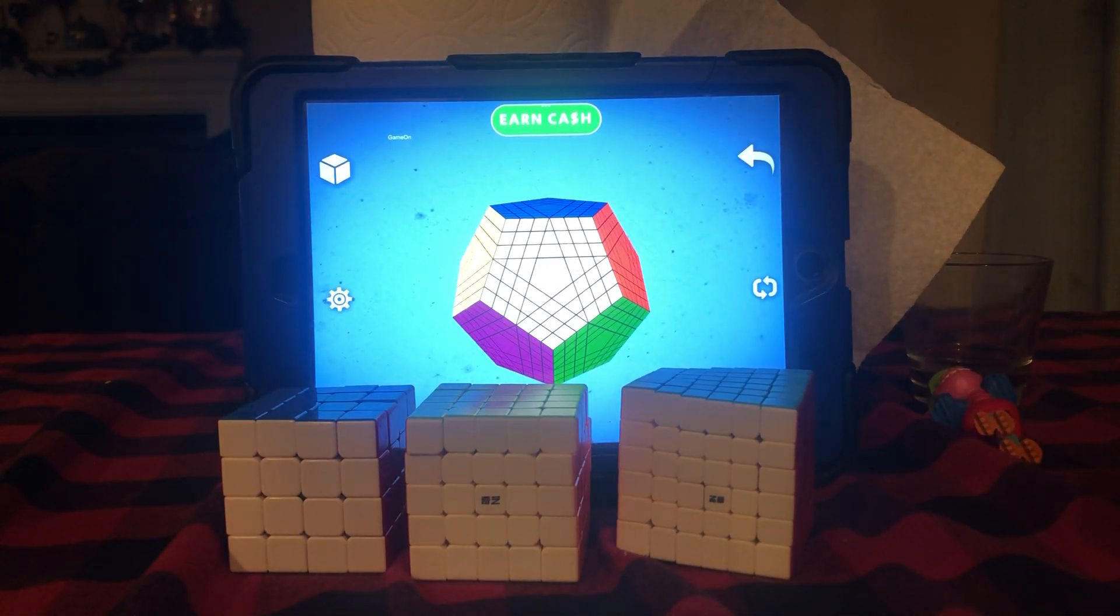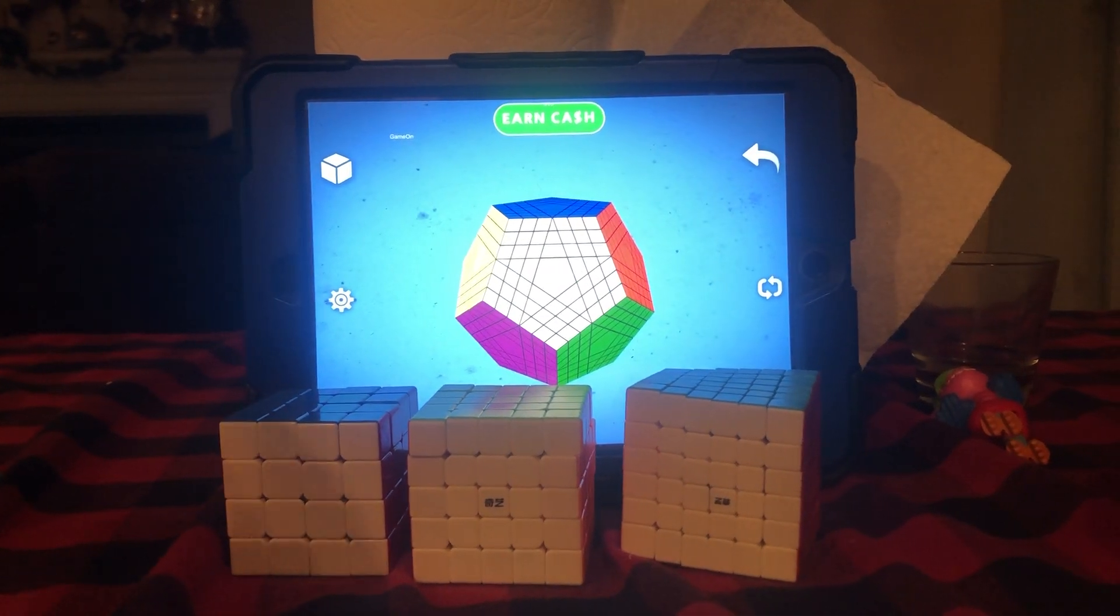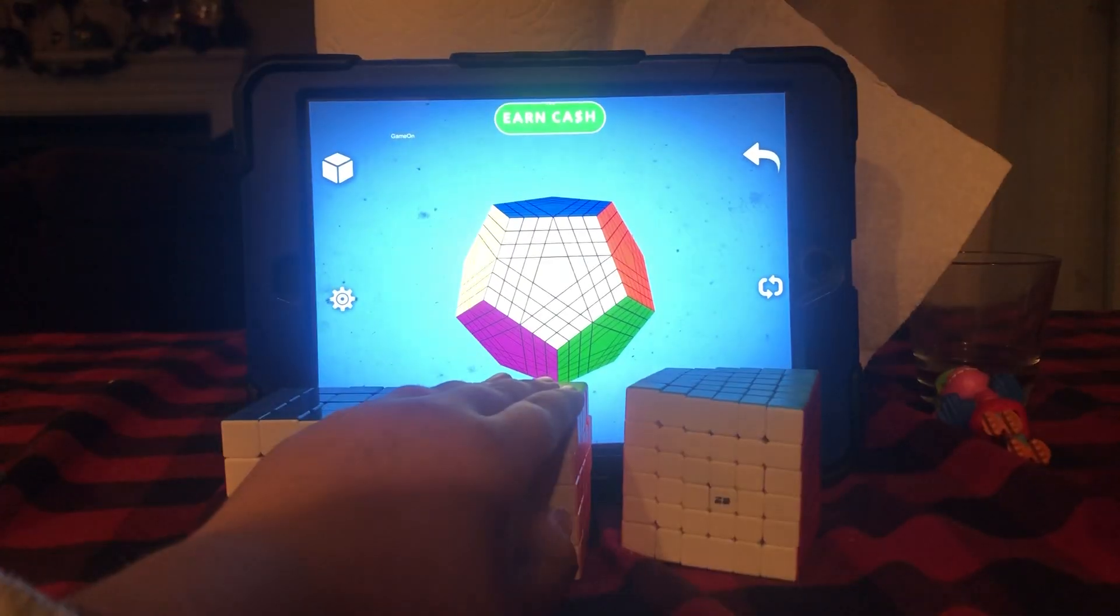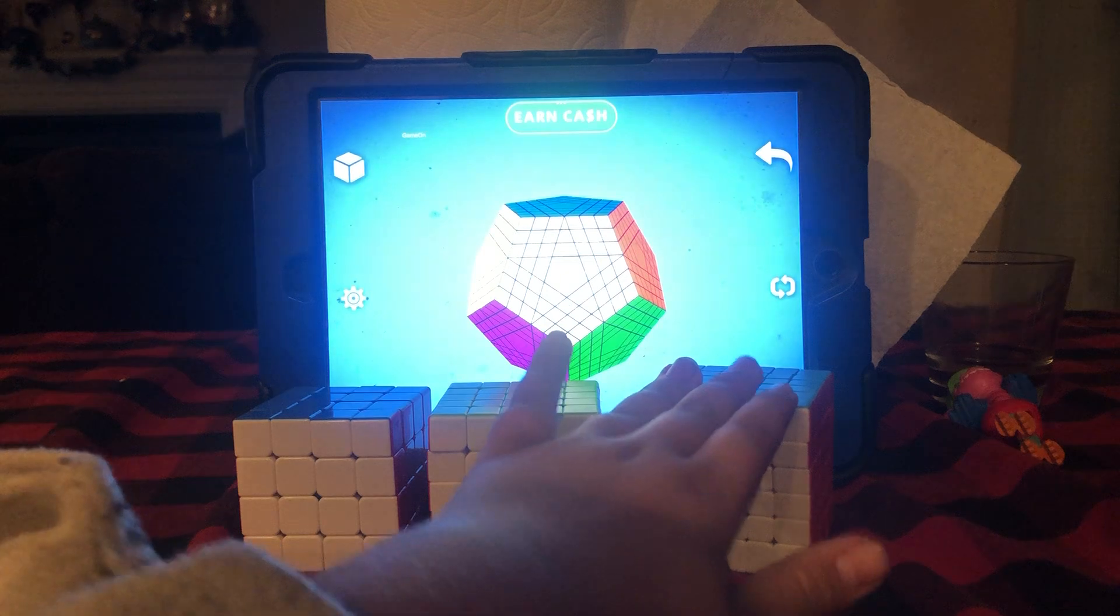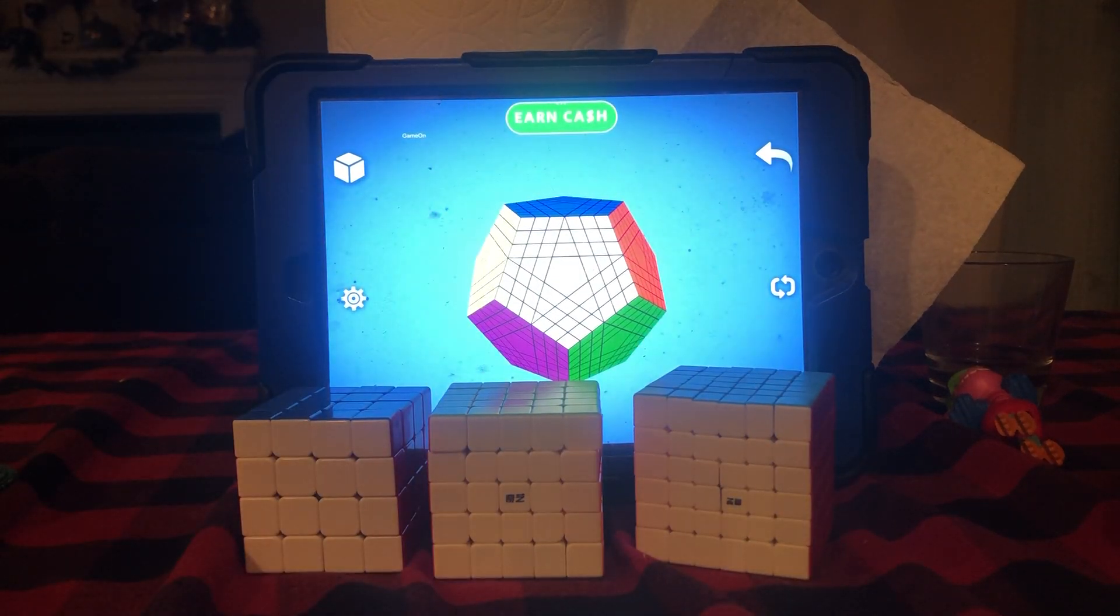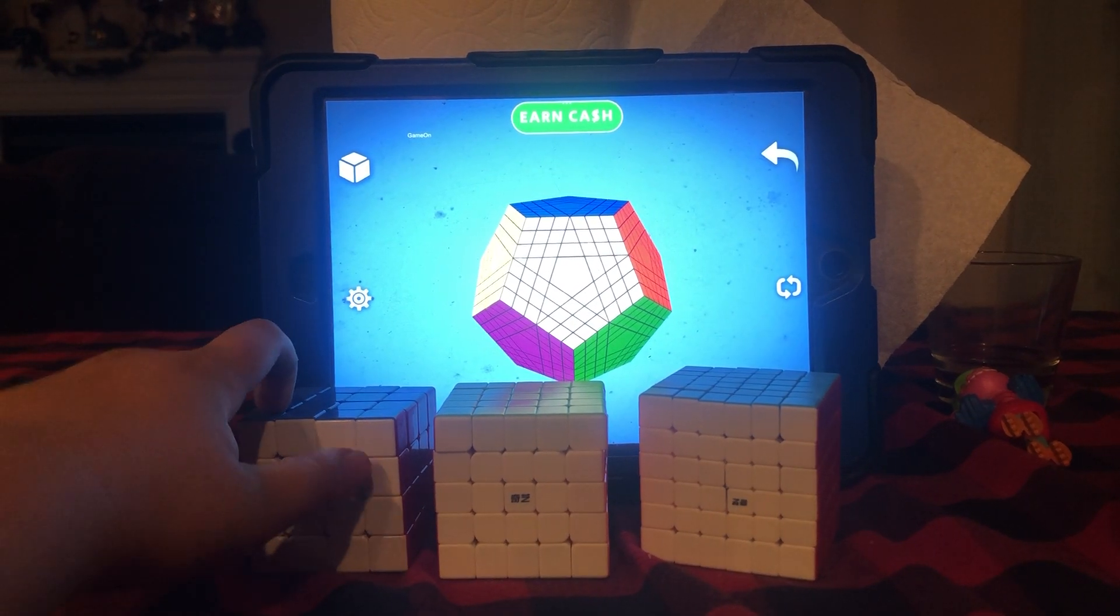In episode 2, we got the 4x4, the 5x5, and the 6x6. It's been a month since we did this, and let's go label these.